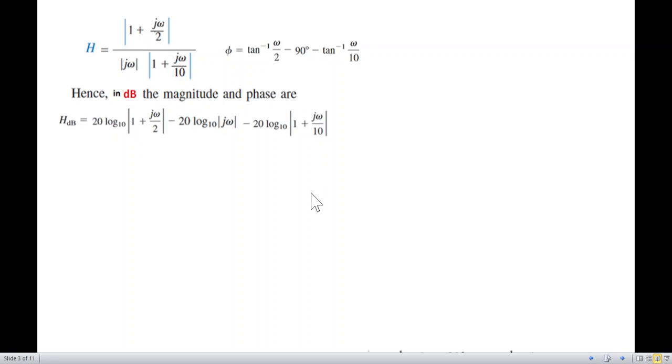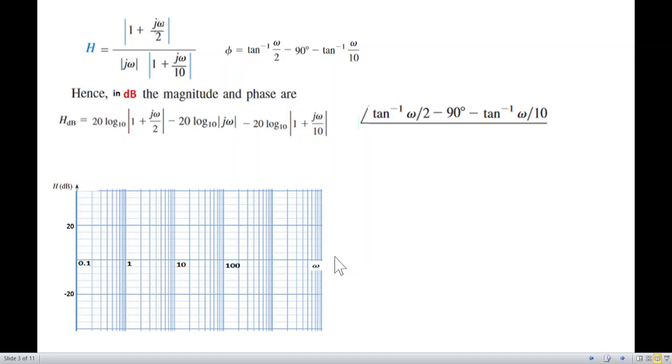We can plot now. The angle remains the same. We plot using logarithmic scale, log graph. We start at point 0.1, 10 times gives 1, 10 times again gives 10, then 100 and 1000. The horizontal axis is log scale and the vertical axis is normal value.